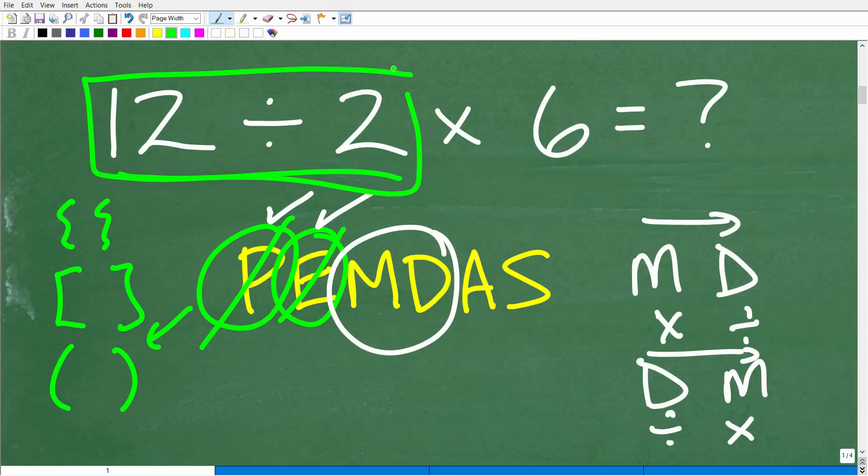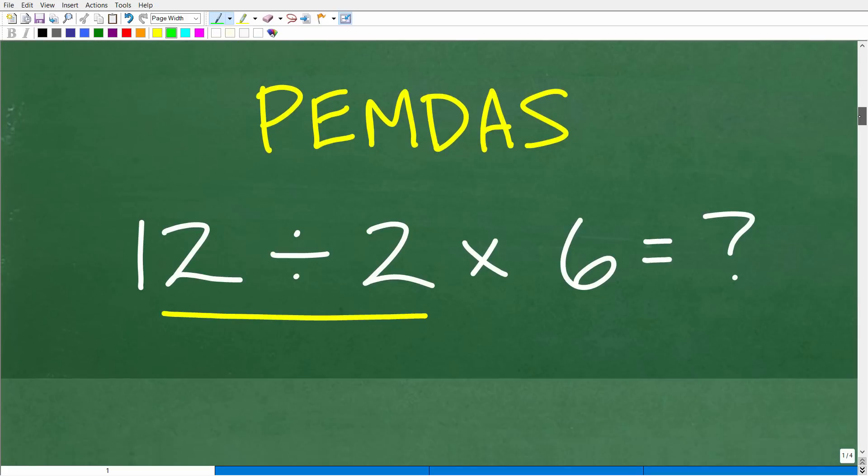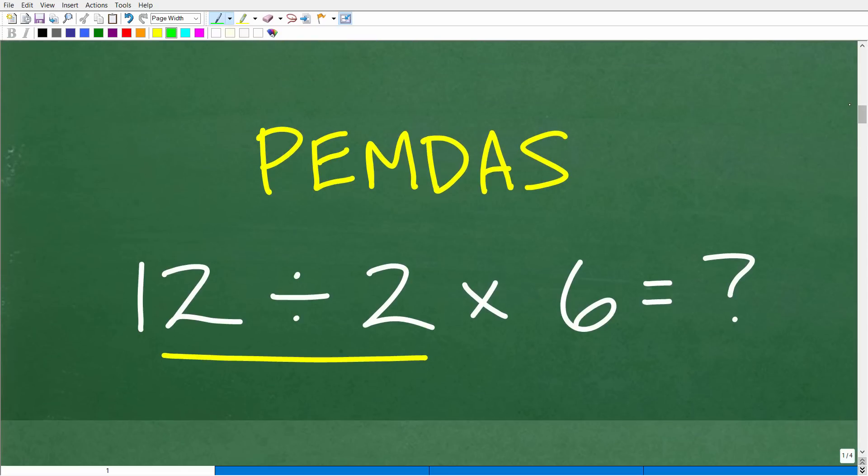Okay so 12 divided by 2 of course will be what? Well the answer is going to be 6. All right so 12 divided by 2 is going to be 6 and then of course we'll walk through the rest of the steps.